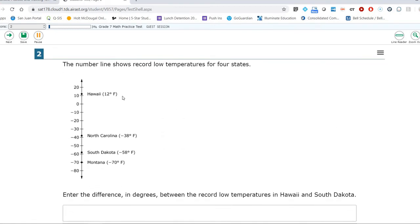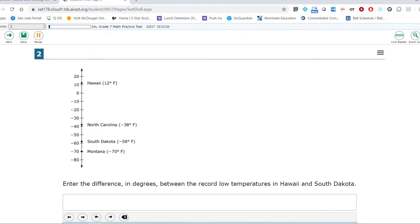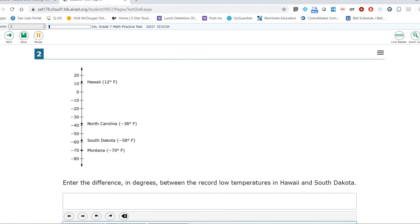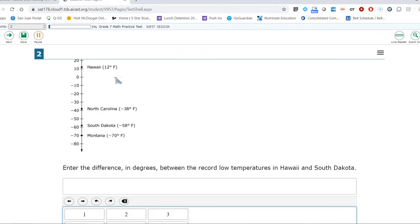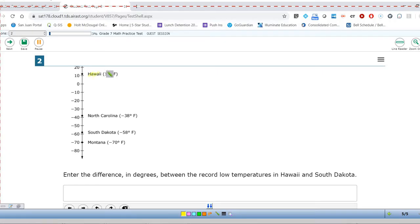Alright so the number line below shows record low temperatures for 4 states: Hawaii, North Carolina, South Dakota, and Montana. And it says enter the difference in degrees between the record low temperatures in Hawaii and in South Dakota. So I'm going to go up here and let's take a look at Hawaii. So Hawaii is right here at 12 degrees Fahrenheit, and South Dakota is down here at negative 58 degrees. And they are asking us for the difference.